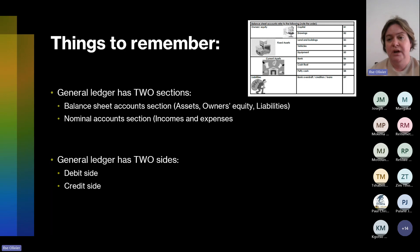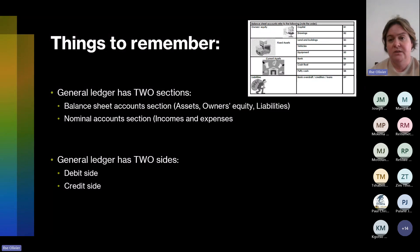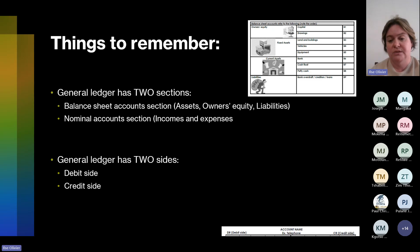If you look at the general ledger from the top, you will have the balance sheet account section that starts with your owner's equity — that is capital and drawings — then your fixed assets: land and buildings, vehicles and equipment. Then your current assets: bank, cash flow, and petty cash. And then your liabilities, that can be creditors and loans.